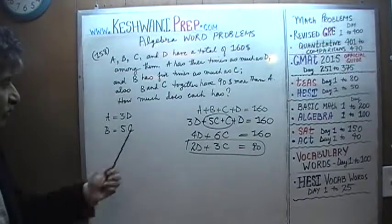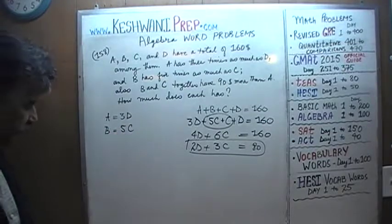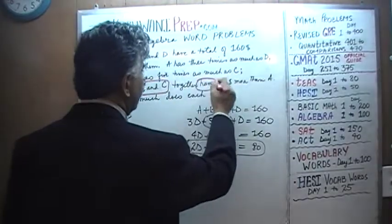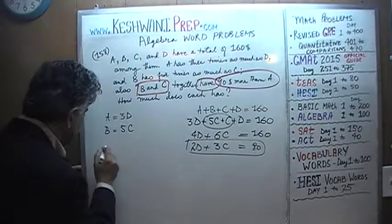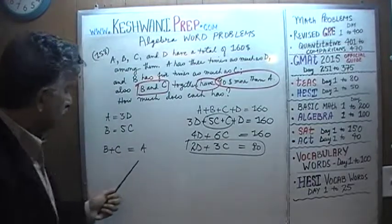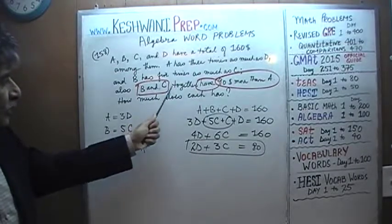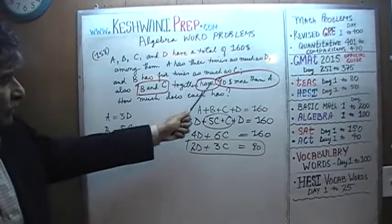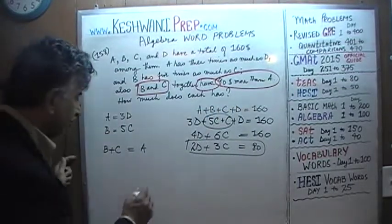I should finish reading the question before we continue solving it. The last part says B and C together have 90 dollars more than A. So the amount of money B and C have together equals the amount A has plus 90. It does not say B and C have the same amount as A — it says they have 90 dollars more.